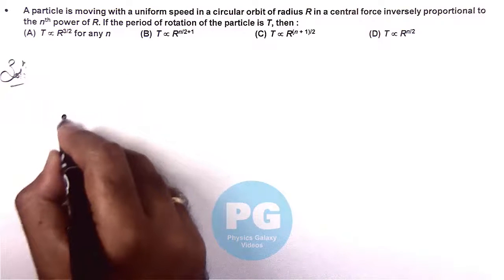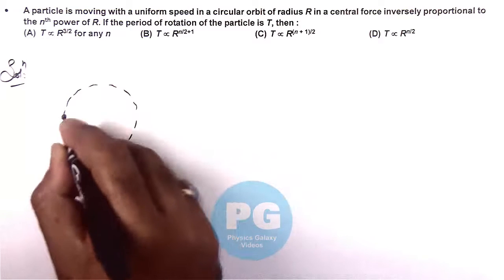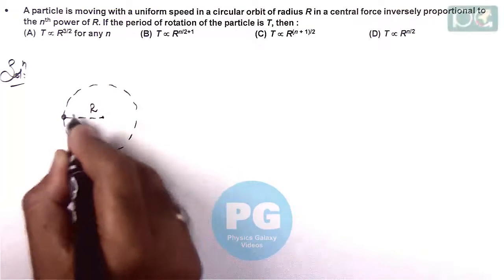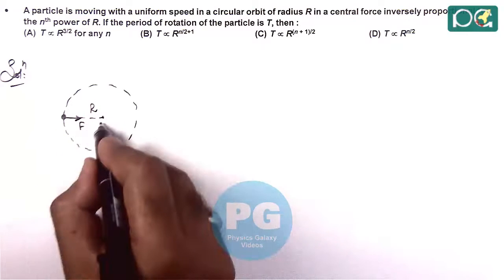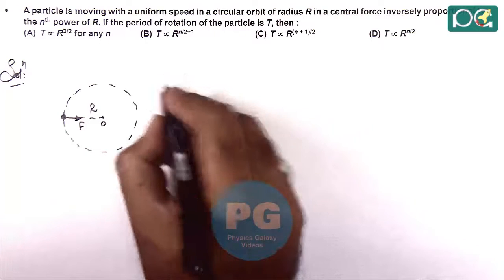So here in the solution, if we visualize, there is a particle which is moving in a circle of radius r. The centripetal force is provided by the central force acting towards the center.